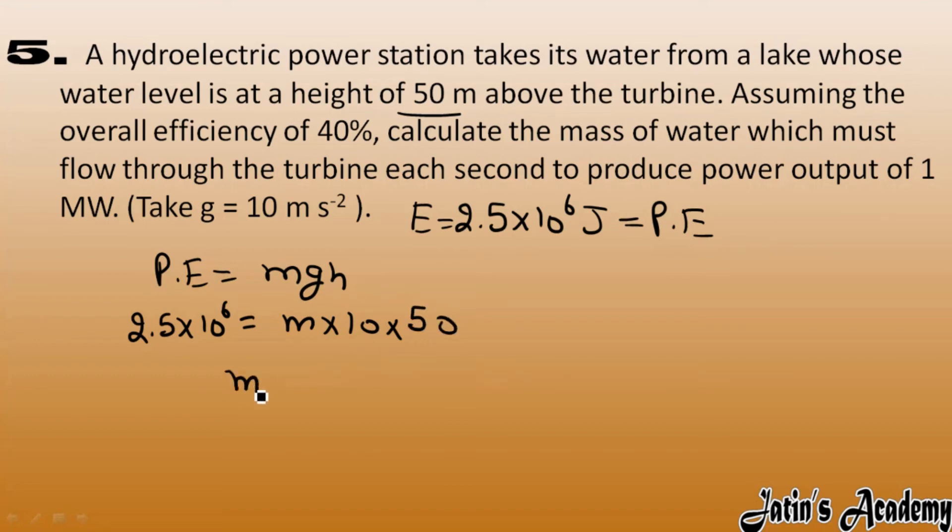So mass here we have calculated as 2.5 into 10 raised to power 6 divided by 10 into 50. So here we got it as 25 by 10 into 10 into 50. And 10 raised to power 6 means 6 zeros. So now we have to just cancel it out.